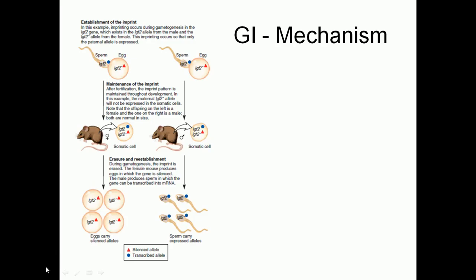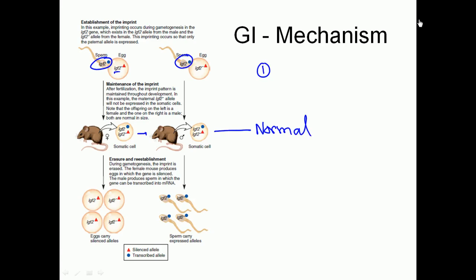Now how this process works: the mechanism of genomic imprinting occurs in three different stages — one is the induction, second is the maintenance, third is the carrying to the next generation. At the very beginning, at the zygote level: the egg contains IGF-2 minus and sperm contains IGF-2. The sperm donates the nucleus with IGF-2, so in both cases IGF-2 is donated by the sperm — it is from the father origin. Both offspring will express IGF-2 from the father origin, so the height of the offspring will be normal.